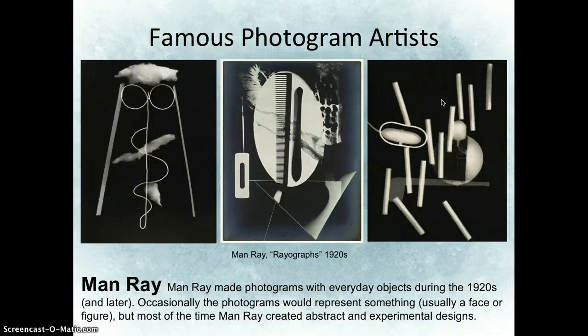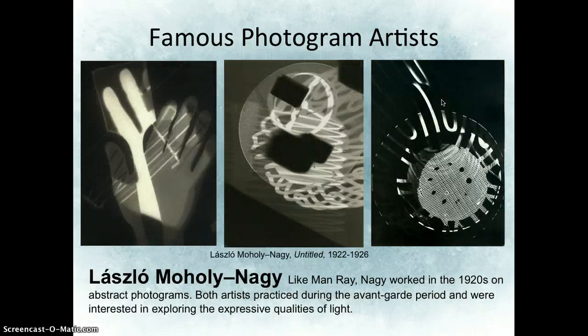Let's jump ahead about 100 years to Man Ray — an American photographer living in Paris, working with abstraction and experimental design. He called his photograms 'rayographs,' and that was his version of the photogram. Sometimes they would represent things, but more often he was interested in how he could arrange objects into an interesting experimental design. Another photographer working at the same time, along similar lines, is Laszlo Moholy-Nagy. They were both interested in the expressive qualities of light — how they could use light to express themselves.